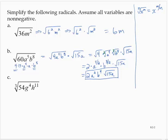The cube root of 54, g to the fourth, h to the eleventh. Since we have a cube root, we are looking for perfect cube factors. 54 is 27 times 2. g to the fourth is g to the third times g. And h to the eleventh is h to the ninth times h to the second.